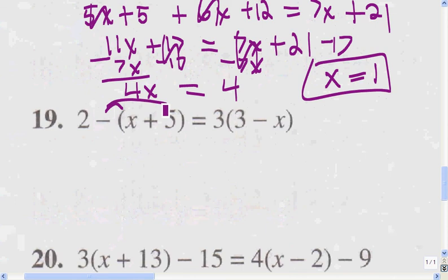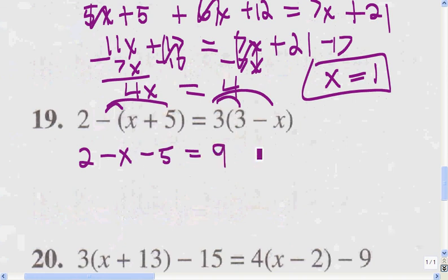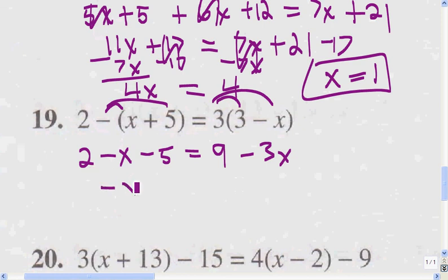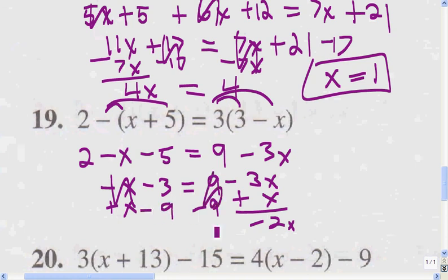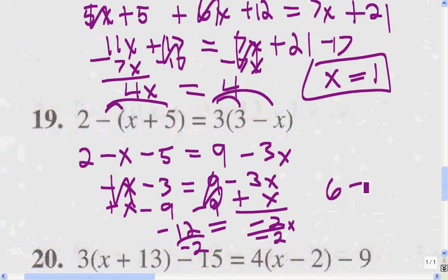Again, multiplying whatever is in front of the parentheses times everything inside, we get 2 minus x minus 5 equals 9 minus 3x. Combining: minus 5 plus 2 gives minus x minus 3 equals 9 minus 3x. I'm going to add x to both sides, then subtract 9 from both sides, giving me negative 2x equals negative 12. Dividing both sides by negative 2 — a negative divided by a negative equals a positive — so I get x equals 6.